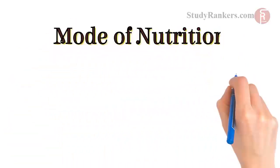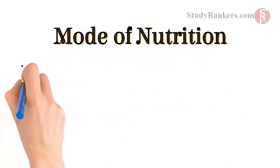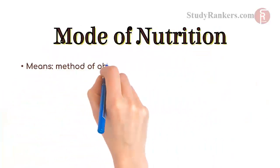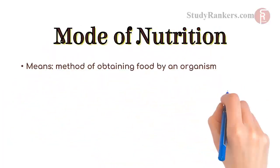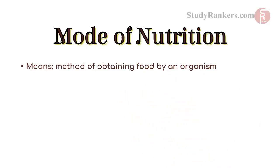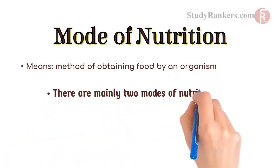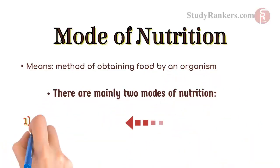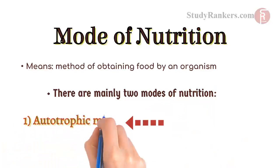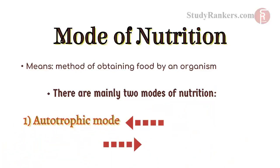Mode of nutrition means method of obtaining food by an organism. There are mainly two modes of nutrition. First one is autotrophic mode and second one is heterotrophic mode. Let us study about them in details.